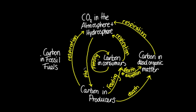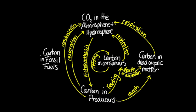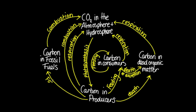Photosynthesis involves the uptake of carbon dioxide from the atmosphere into the plants or producers. Combustion or burning releases carbon dioxide into the atmosphere. And finally, fossilisation or partial decomposition transfers carbon from producers to fossil fuels.